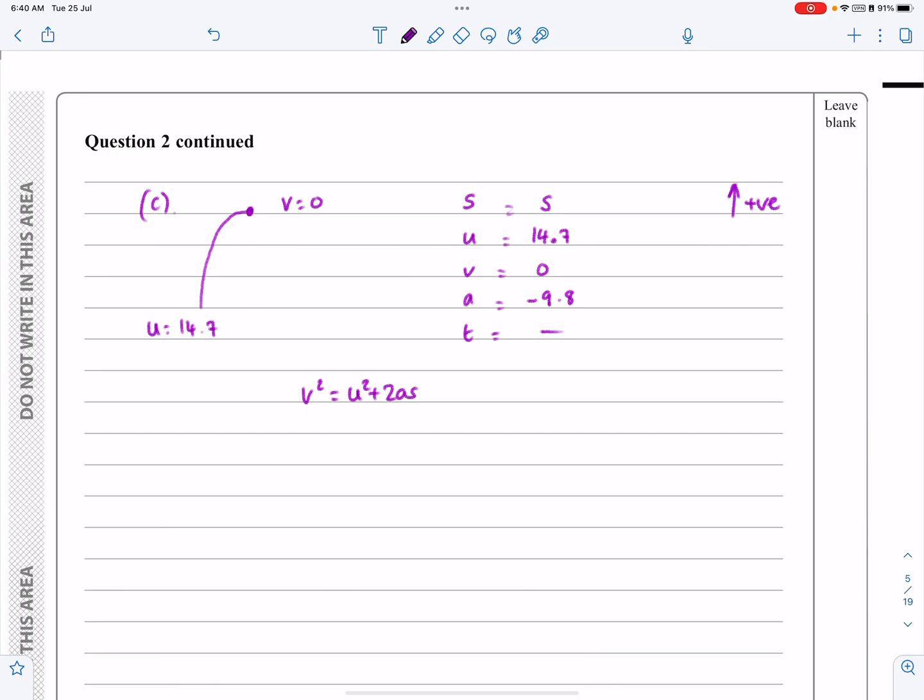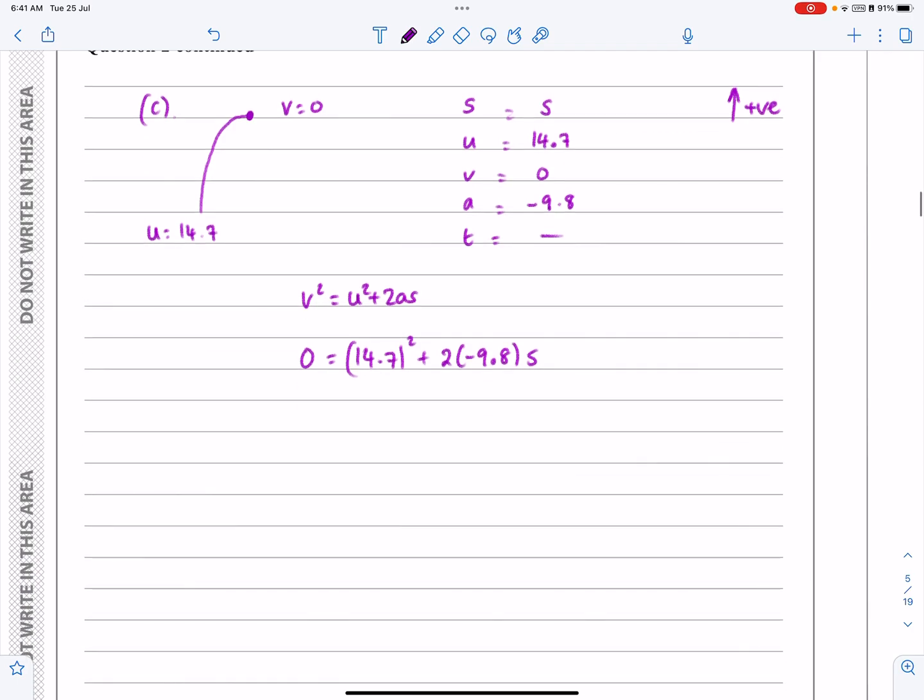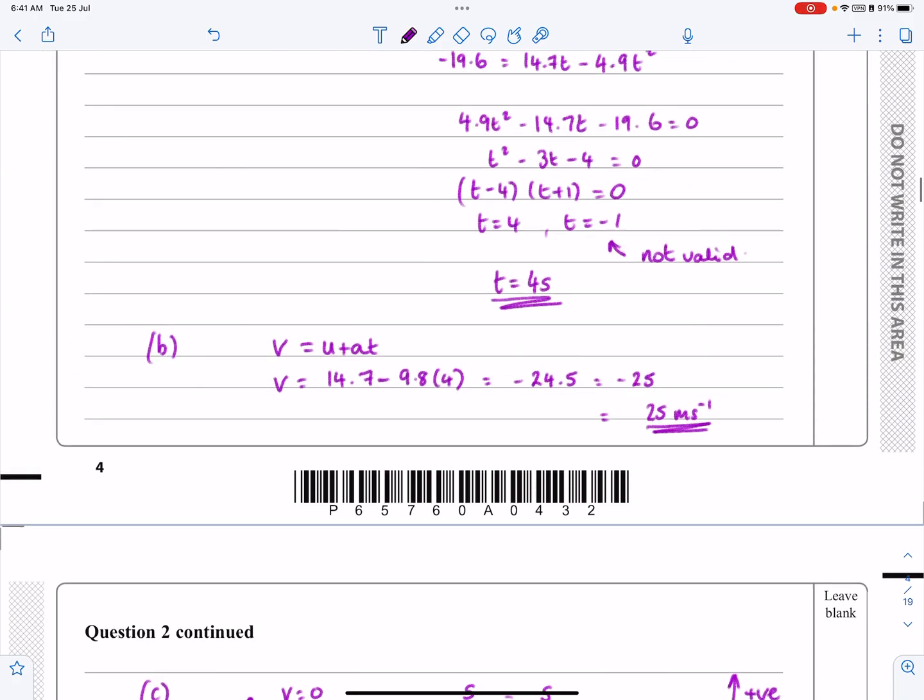So V squared equals U squared plus 2AS. That's going to be nothing. That's going to be 14.7 squared. It's going to be plus 2 times minus 9.8 times S. Again, another hint here. I can see this is going to work out now. I know S should work out to be positive. And because of the negative bit there, that is all going to work out. In fact, I'm just going to put it in. It's taken a long time with this video so far. If you put all that in, S works out to be 11.025.